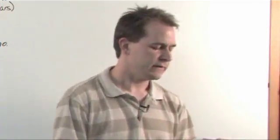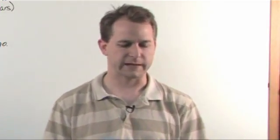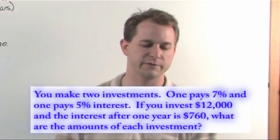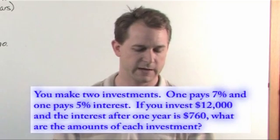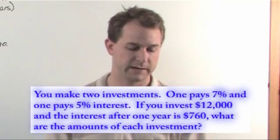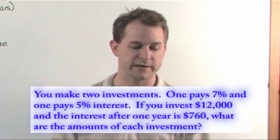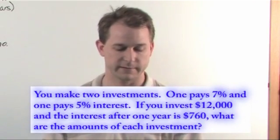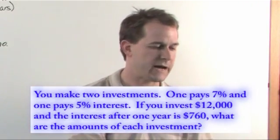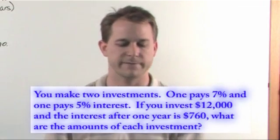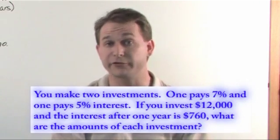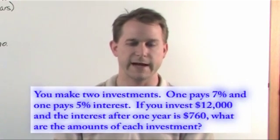So the first actual word problem goes something like this. You make two investments. One investment pays 7% and the other investment pays 5%. If you invest $12,000 and the interest after one year is $760, then what are the amounts of each investment that you made? So again, you have two investments, different interest rates. One pot of money is growing at 7%, other pot of money is growing at 5%. But if you invest a total amount of money of $12,000 split between these two investments...